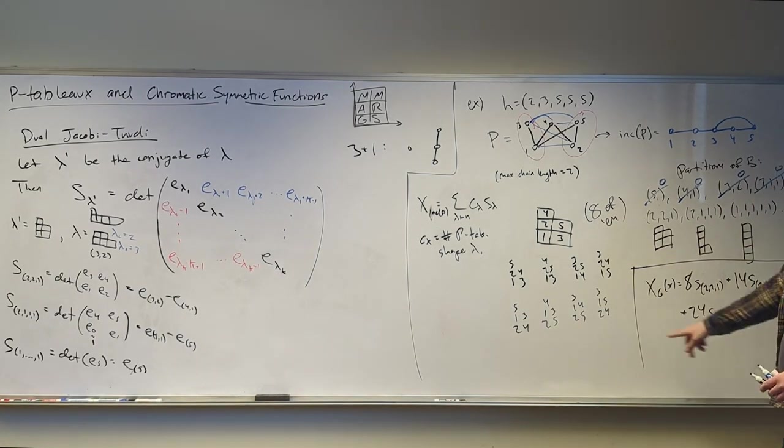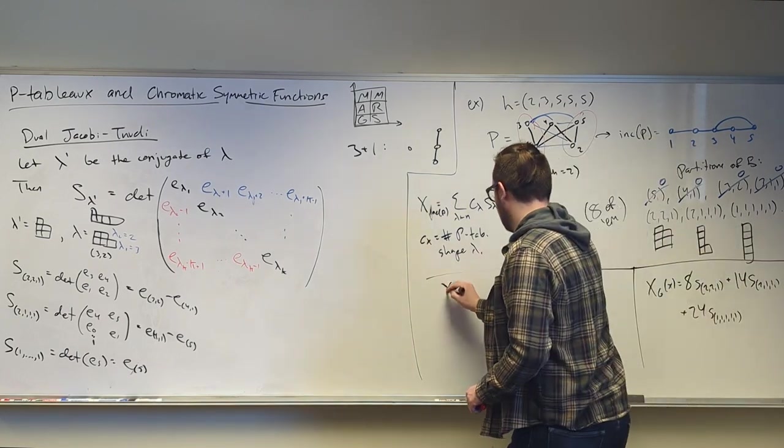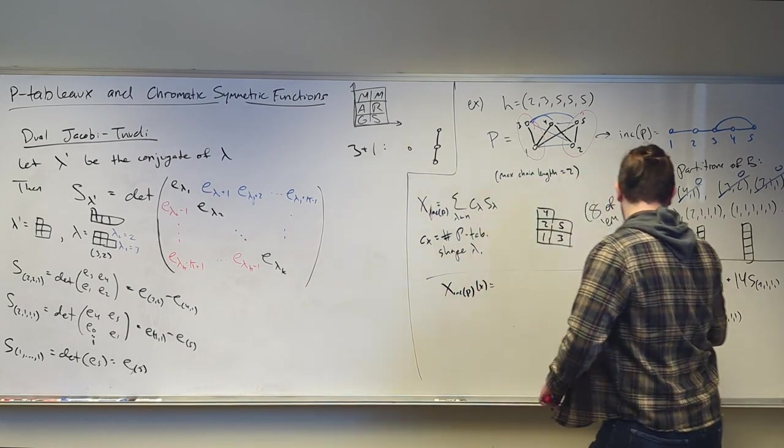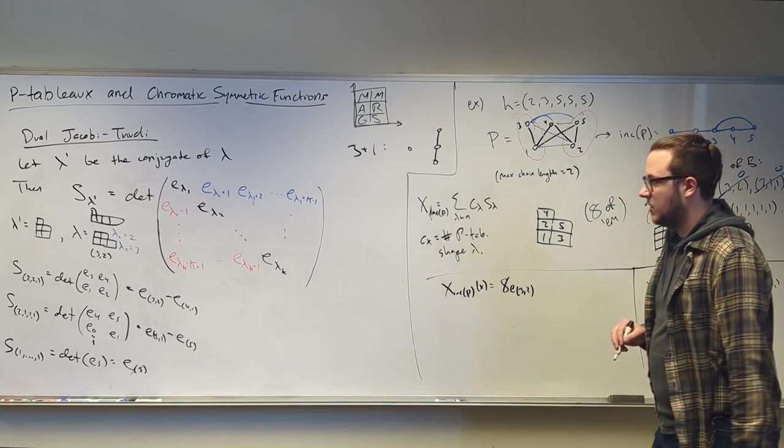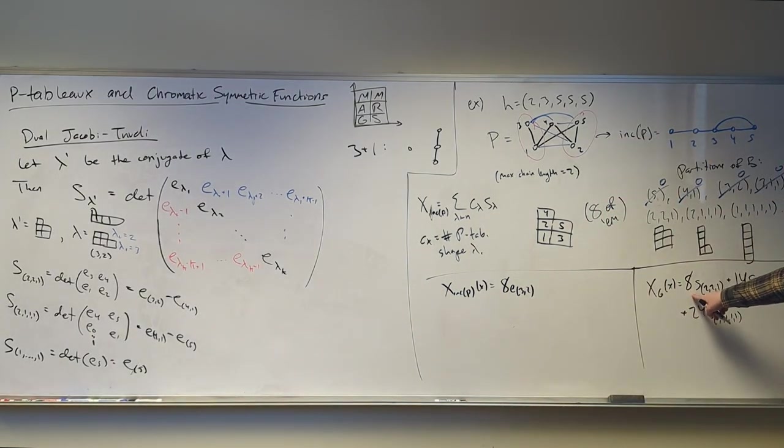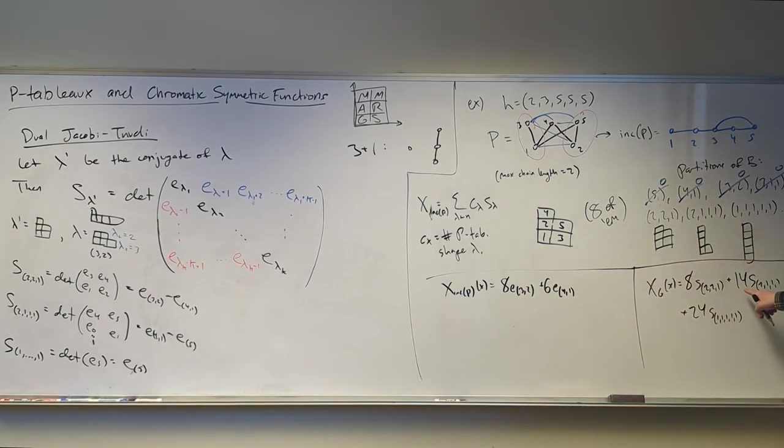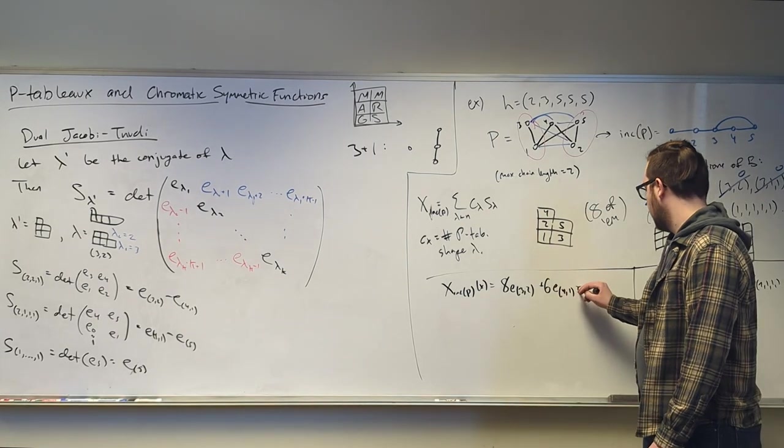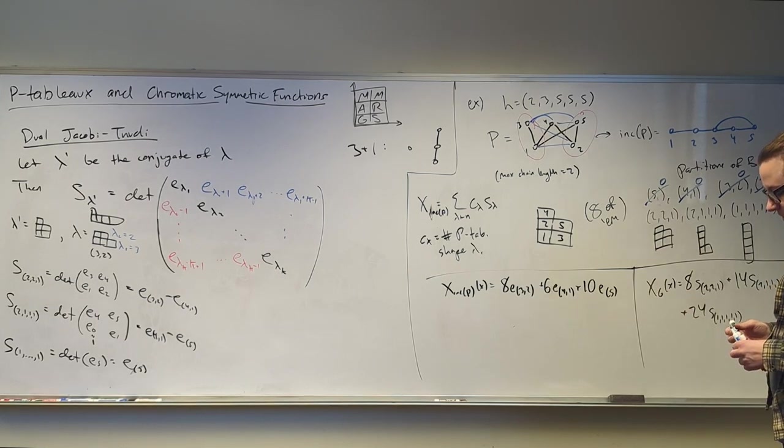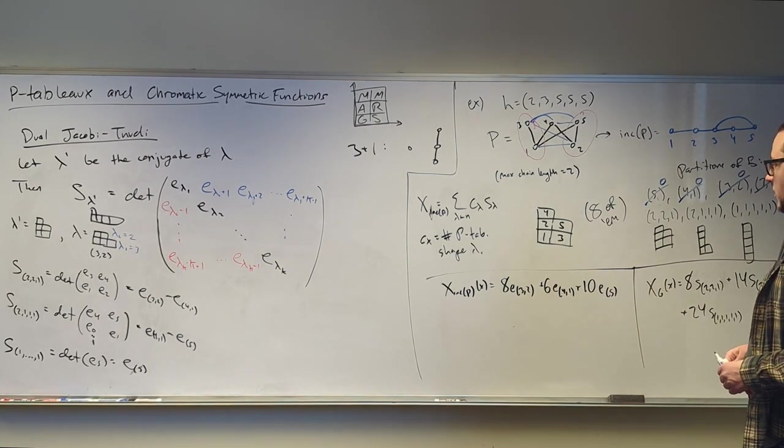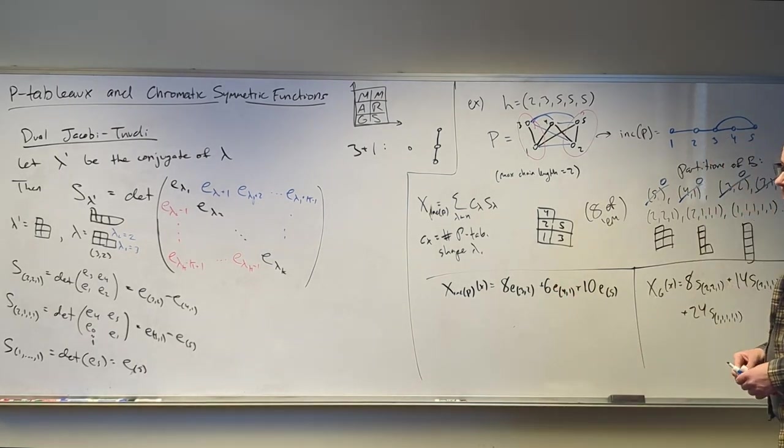All right, this is a little spooky, because we have a minus sign. But in this case, it'll all work out and we'll have more positives than negatives. Okay, if we look at our next partition, 2, 1, 1, 1, we're going to be considering lambda equals 4, 1. So this is the determinant of e4, e5, e1, e0. And e0 is just 1, the degree 0 elementary symmetric function. So this one is going to be e4, 1 minus e5. And finally, if I have a column, that's just the determinant of e5, which is e5. Okay, so if we plug that and replace all of these Schur functions with elementary symmetric functions, we will get the following. Okay, so we have 8 e3, 2s. That doesn't show up in any of the other ones. We have minus 8 e4, 1s plus 14 of them, so we'll have 6 left over. And we have minus 14 e5s plus 24 e5s, so plus 10 left over. And everything worked out, and this is expanded positively in the elementary symmetric function basis.